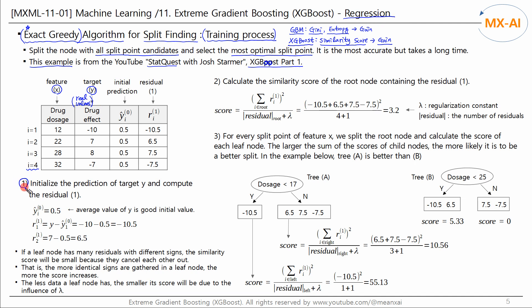Step 1 calculates the initial prediction of target Y and uses this initial prediction to calculate the residuals. We can use a random value as the initial prediction or use the average value of target Y. In this example, 0.5 was used as the initial prediction. This estimate is updated during each iteration, so it is not very sensitive to the initial prediction. The initial predictions for all data points are set to 0.5, and we then calculate the residuals using the actual Y values and the initial predictions.